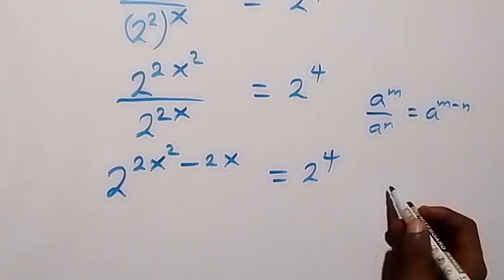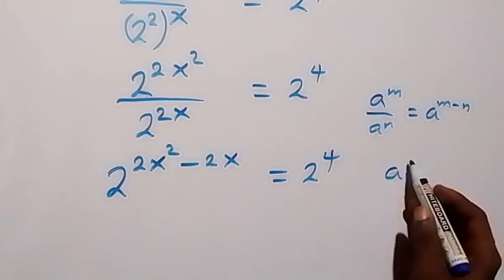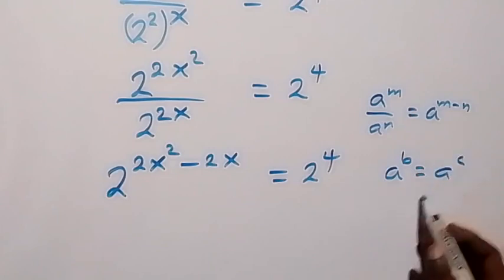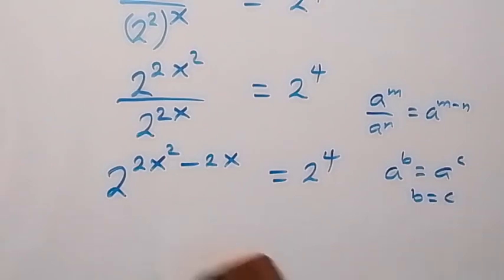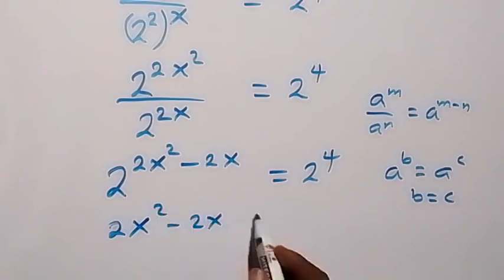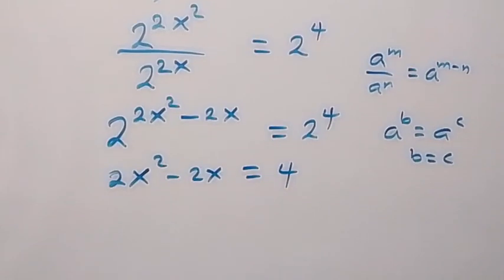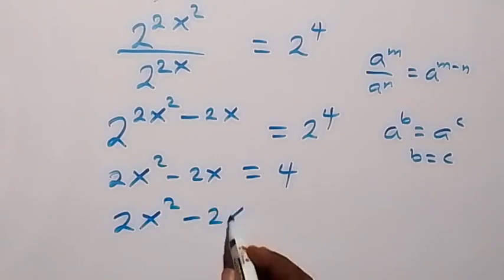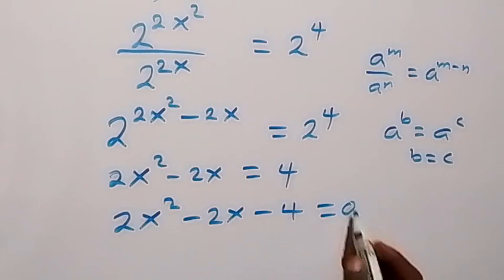Since we have the same base on both sides — a raised to power b equals a raised to power c means b equals c — we get 2x squared minus 2x equals 4. Rearranging gives us 2x squared minus 2x minus 4 equals 0.